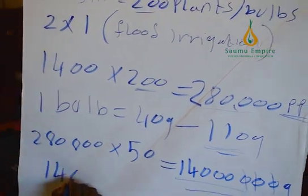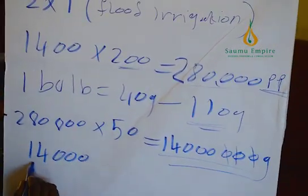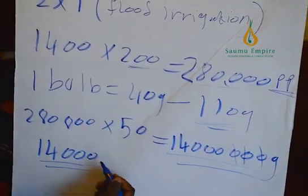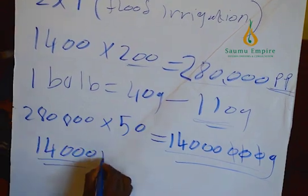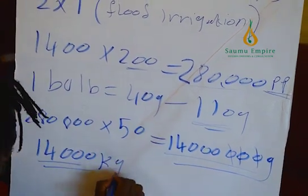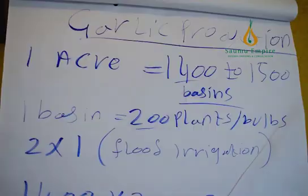That equals 14 tons — or 14,000 kilograms per acre.